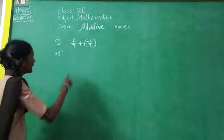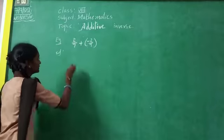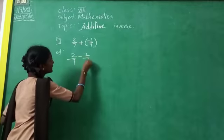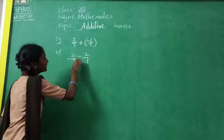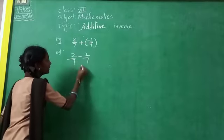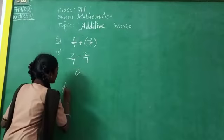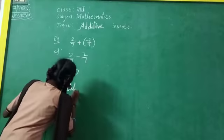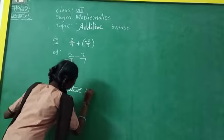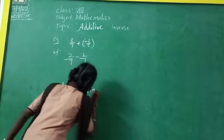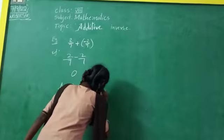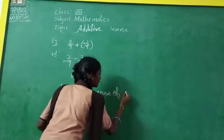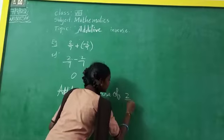Example. 2 by 7 plus minus 2 by 7. 2 by 7 minus 2 by 7, plus into minus minus, equals to 0. Edito-Inverse of minus 2 by 7...